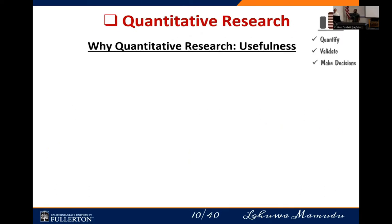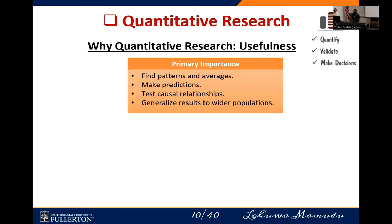Now let us look at why we even need quantitative research. There are four key reasons. First, to study patterns or averages — for a group of individuals with high blood pressure, you might want to know the average blood pressure for an age group, or study patterns during a disease outbreak like COVID-19, tracking changes in the number of individuals being infected over time. You can also use it to make predictions, such as whether glucose level predicts blood pressure.